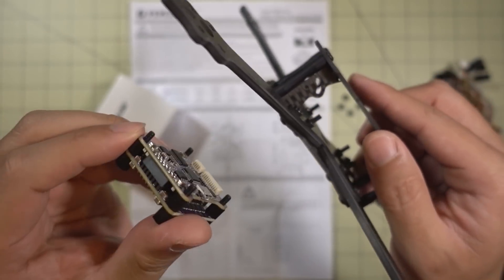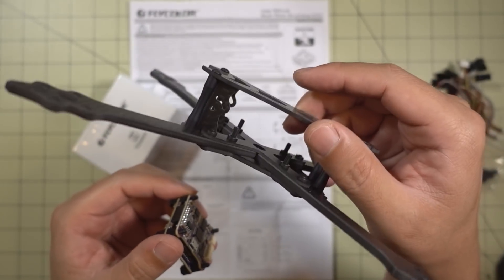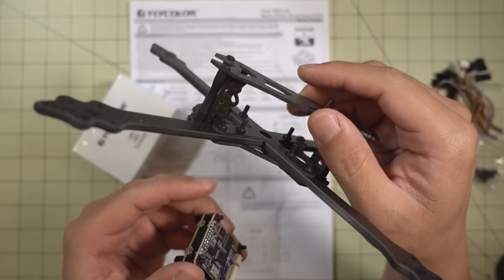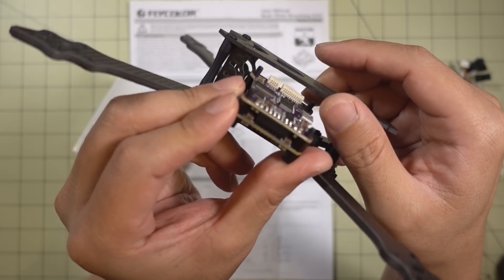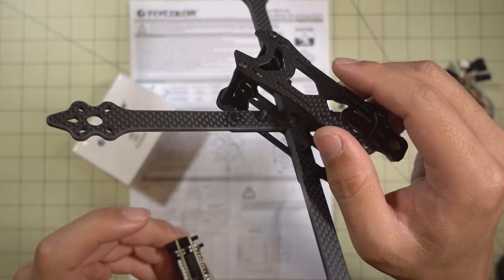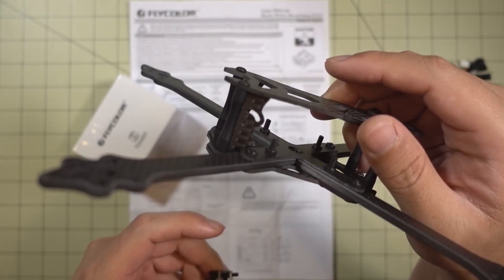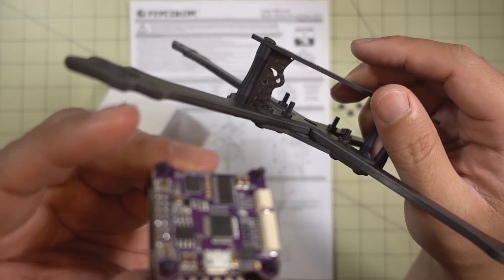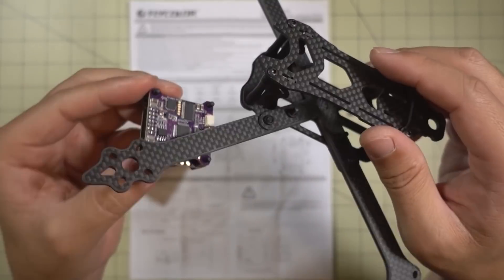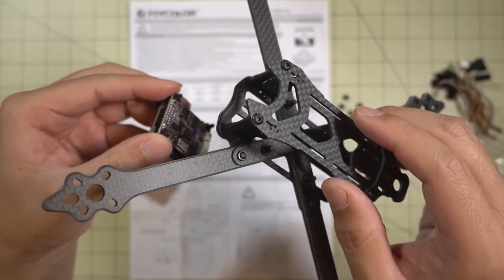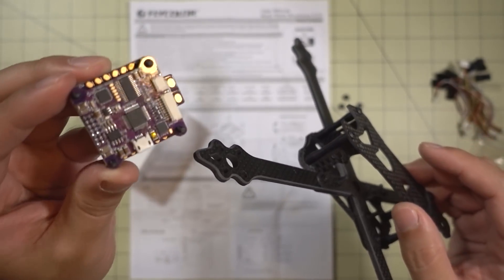I'm going to probably put this little stack in the XBX2 right here. It should make for a really clean build. Connect up your motors, and all you'll need is your video transmitter and your camera. Look out for that video when I do the build for this.